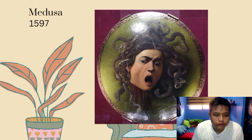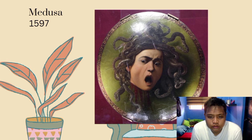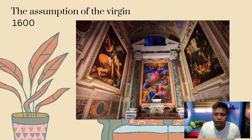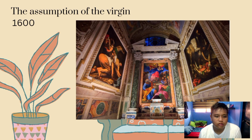Medusa, 1597. Caravaggio (1571–1610) is known as much for his short and tempestuous life as for his works of art. His popular and controversial paintings were characterized by their drama. The Assumption of the Virgin, 1600 — by the end of the 16th century, the Catholic Church was once again feeling optimistic, having emerged from its crisis with renewed vigor and clarity of purpose.